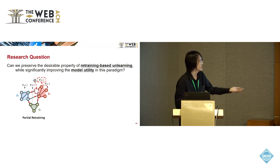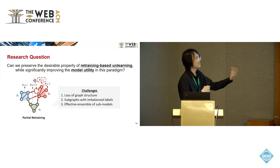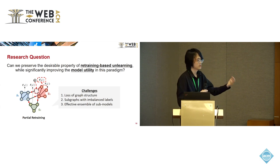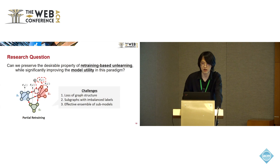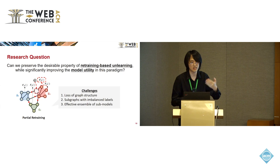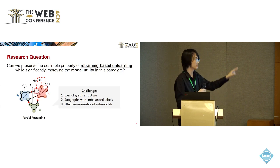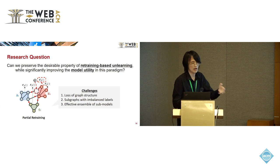Solving this research question is quite challenging. The main technical challenges are as follows. The graph partitioning process could break the graph structure, so the first challenge is how to alleviate the loss of graph structure during partitioning. Another problem is that partitioning the whole training graph into multiple sub-graphs may disturb the label distribution, so some sub-graphs may contain unbalanced labels, resulting in biased sub-models. Additionally, partial retraining-based graph neural networks have to make predictions with multiple sub-models, which necessitates a novel ensemble method for these isolatedly trained sub-models.